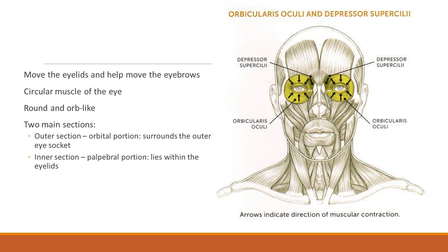The orbicularis oculi and the depressor supracilii — we can see these muscles around the eyes. Look at the arrows showing the different directions the muscle pulls. Even though it's a circular muscle around the eye, it still pulls toward the center. There's an outer orbital portion surrounding the outer eye socket, and an inner palpebral portion within the eyelids. They all contribute to blinking, squinting, and opening wide.